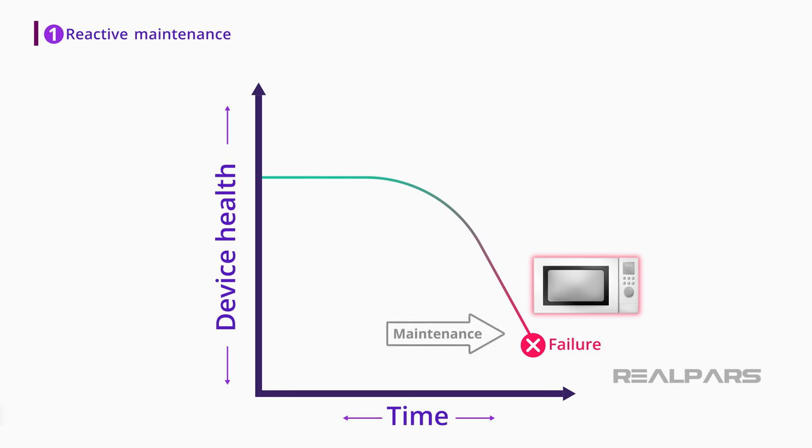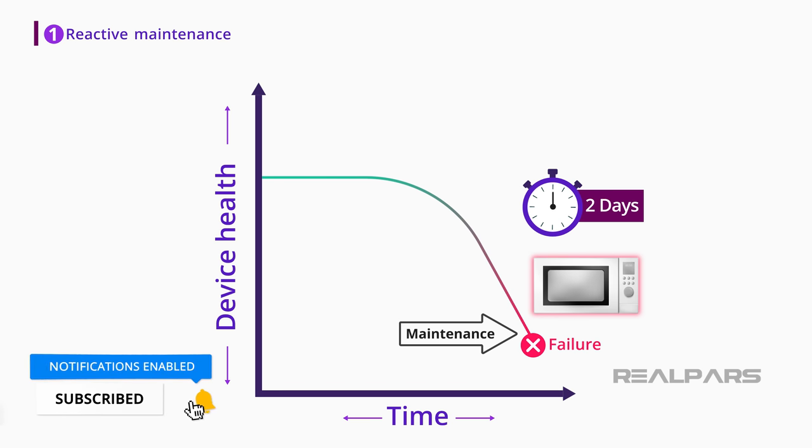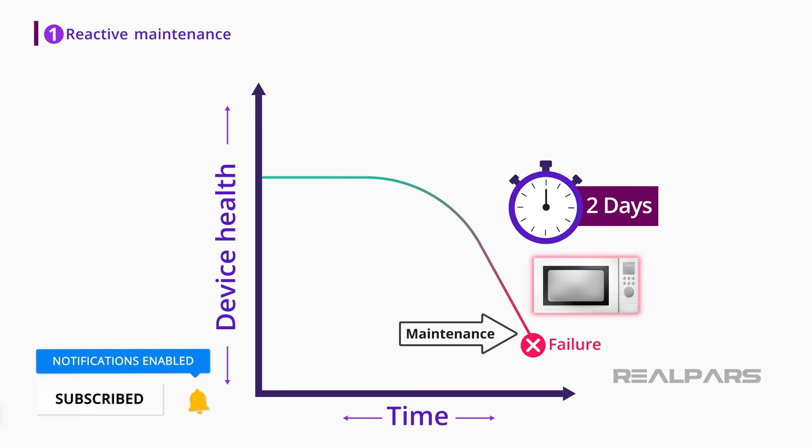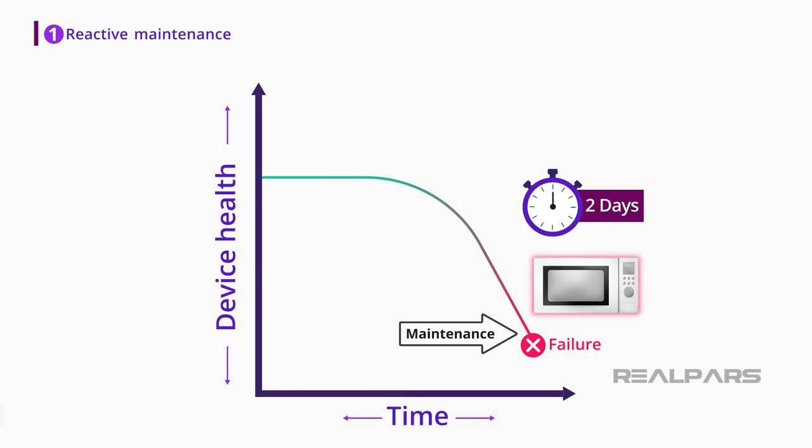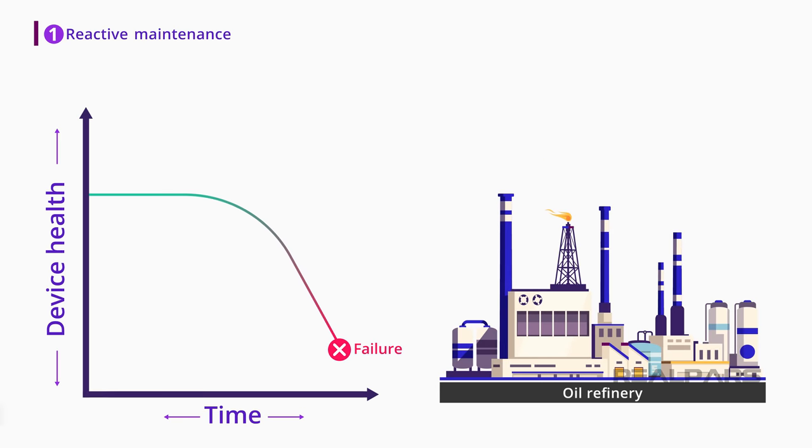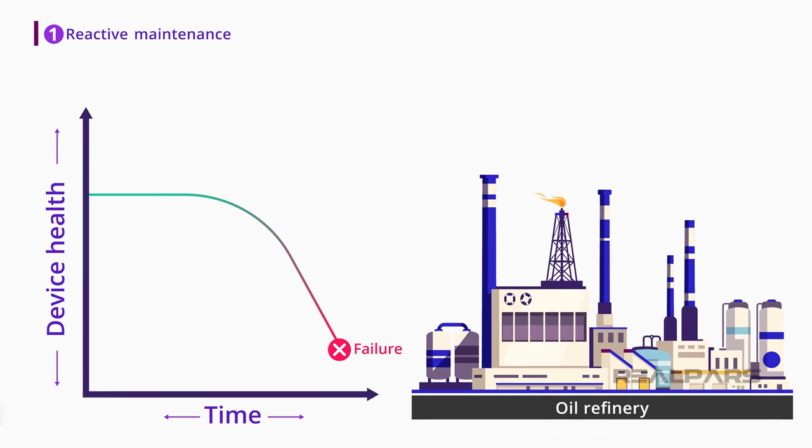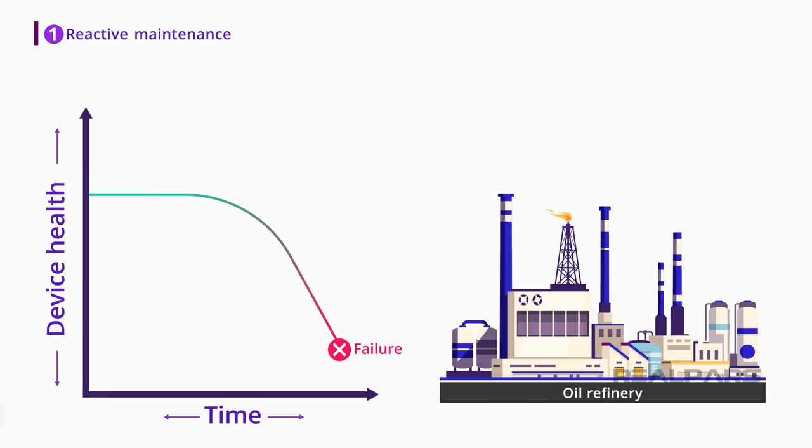In this case, you repair the microwave or buy a new one, but it may take a couple of days for you to either repair the microwave or buy a new one. That means with this wait and react way of maintenance, you may not be able to use your microwave for a couple of days, which is not a big deal. However, if the same thing happens in a big industrial enterprise like an oil refinery, there might be huge consequences.